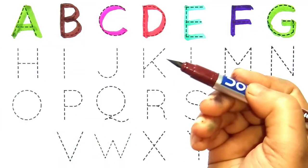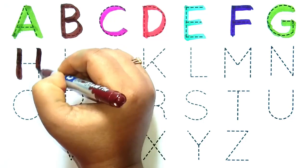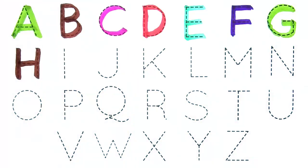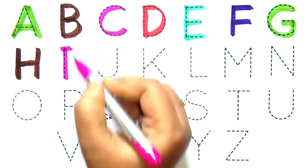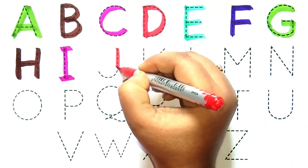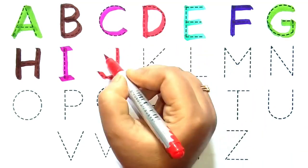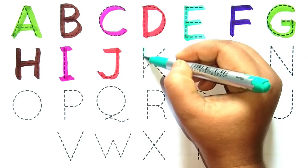Brown color H. H for hen. Pink color I. I for iron. Red color J. J for joker.